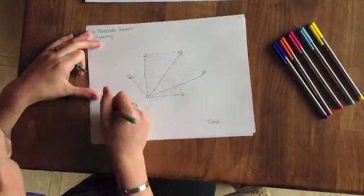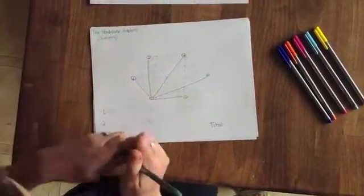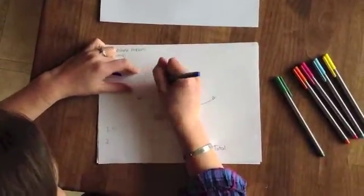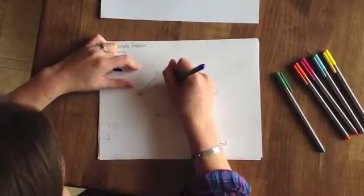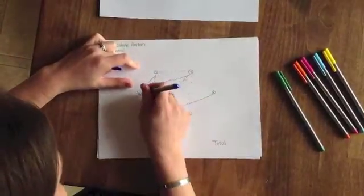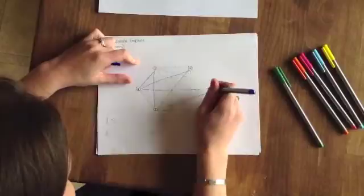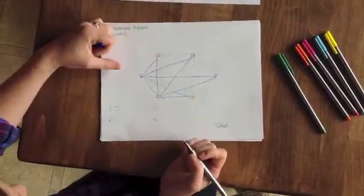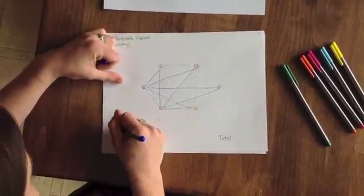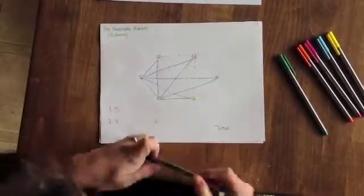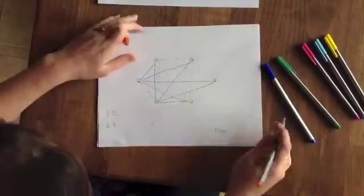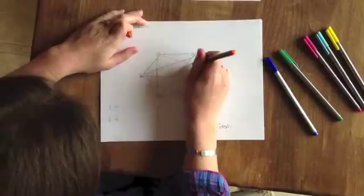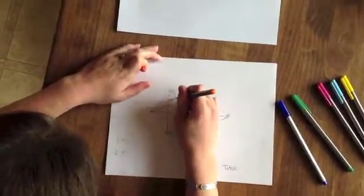Now let's record our answer down here. Person two is going to shake hands one, two, three, four times, because they've already shaken hands with person number one, so they have four handshakes. Person number three is going to shake hands one, two, three times.